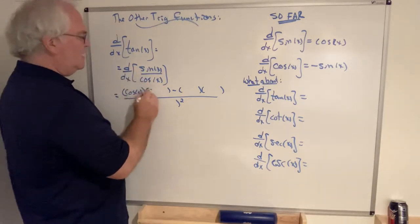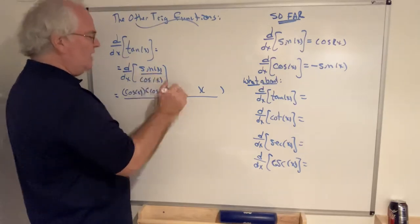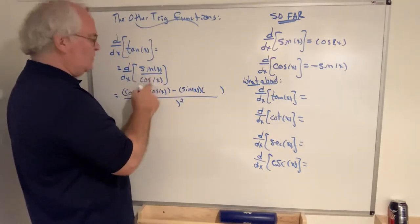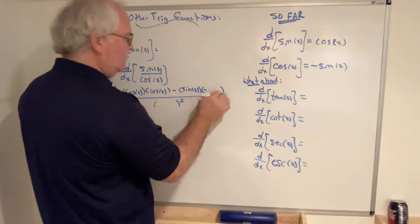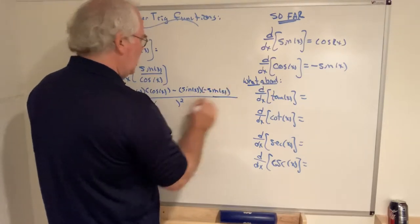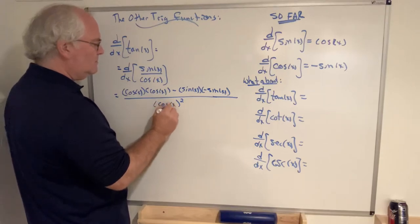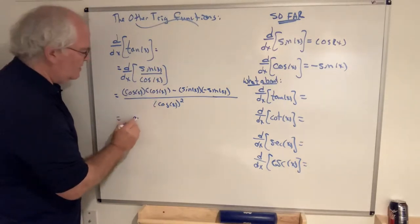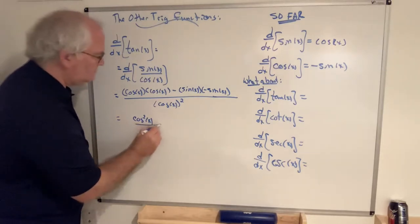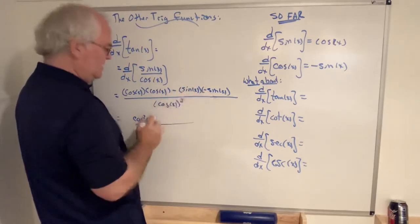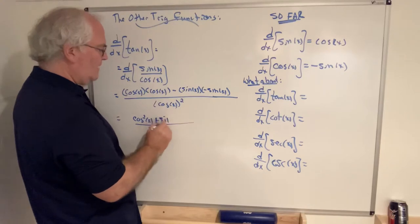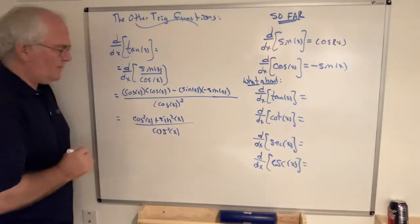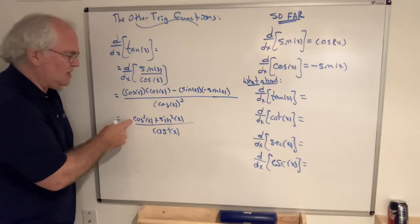The derivative of the numerator is cosine of x. Minus the numerator, times the derivative of the denominator. The derivative of cosine is negative sine of x, all over the denominator squared. So when we expand: cosine times cosine is cosine squared, and negative times negative is positive, so sine times sine gives us sine squared. This is all over cosine squared.